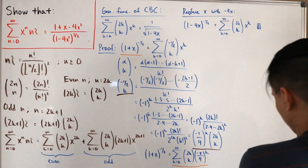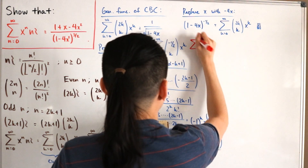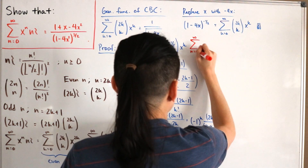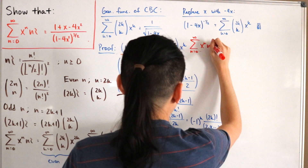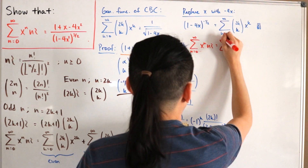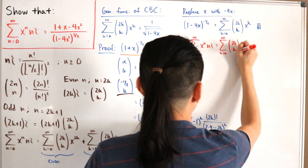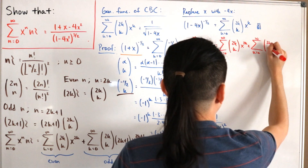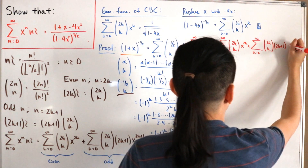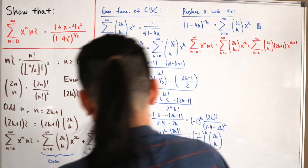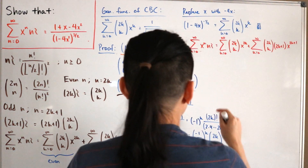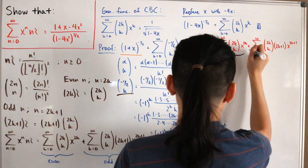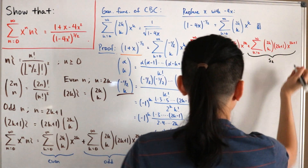Now we restate our main sum: Σ_{n=0}^∞ x^n · (swinging factorial of n) = Σ_{k=0}^∞ C(2k,k) · x^(2k) + Σ_{k=0}^∞ C(2k,k) · (2k+1) · x^(2k+1). We label the first sum S1 (even terms) and the second S2 (odd terms), and compute each separately.